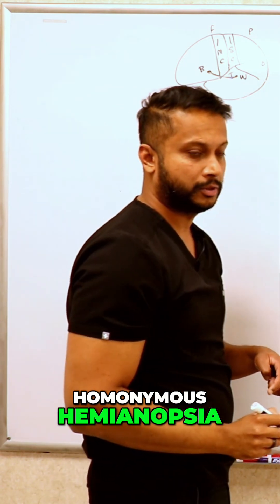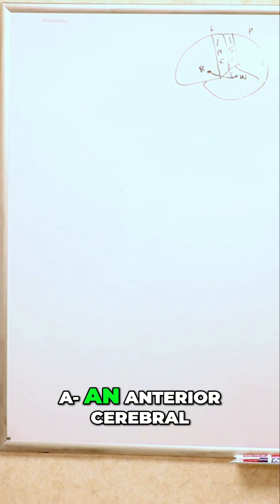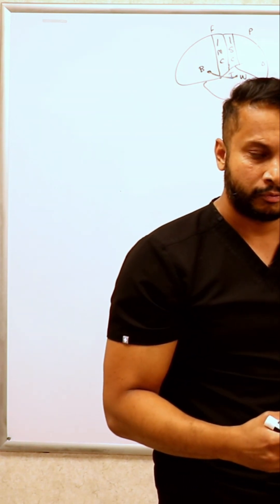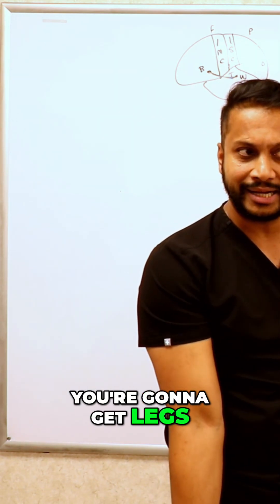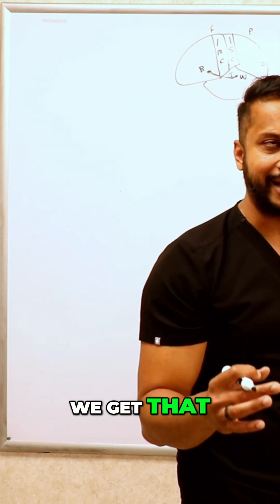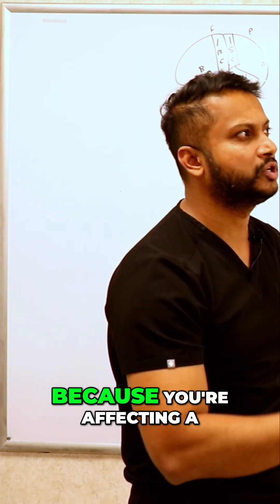Now when it comes to an anterior cerebral artery stroke, what are you going to get there? You're gonna get legs affected more than arms. We get that, but what else would happen because you're affecting your frontal lobe when it comes to ACA stroke?